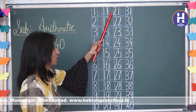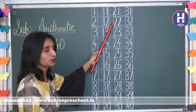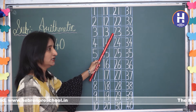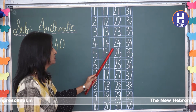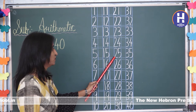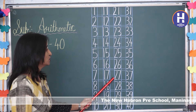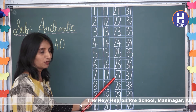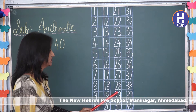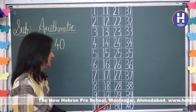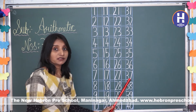2, 1 — 21. 2, 2 — 22. 2, 3 — 23. 2, 4 — 24. 2, 5 — 25. 2, 6 — 26. 2, 7 — 27. 2, 8 — 28. 2, 9 — 29. 3, 0 — 30.